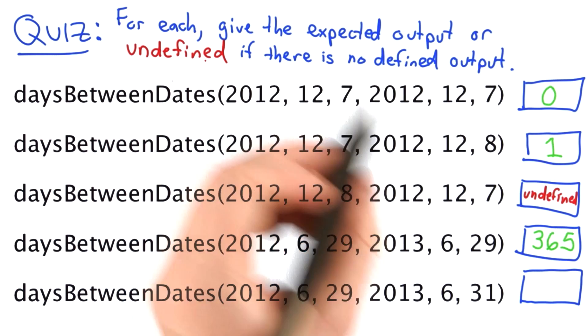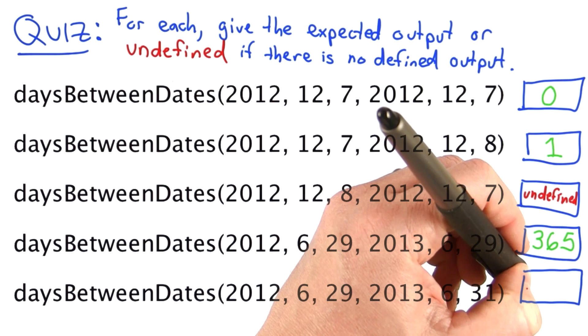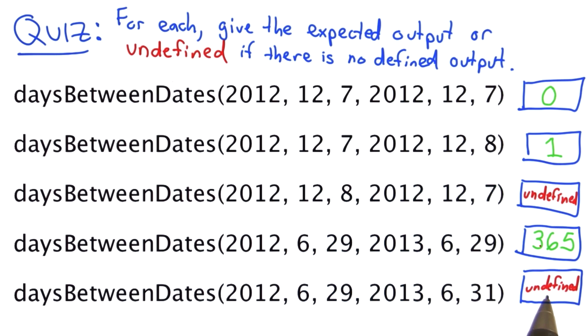The way we specify the problem, we said that both input dates have to be valid dates in the Gregorian calendar. That means the output here is undefined. We'd like to get some kind of error output, but there's no requirement for our procedure.